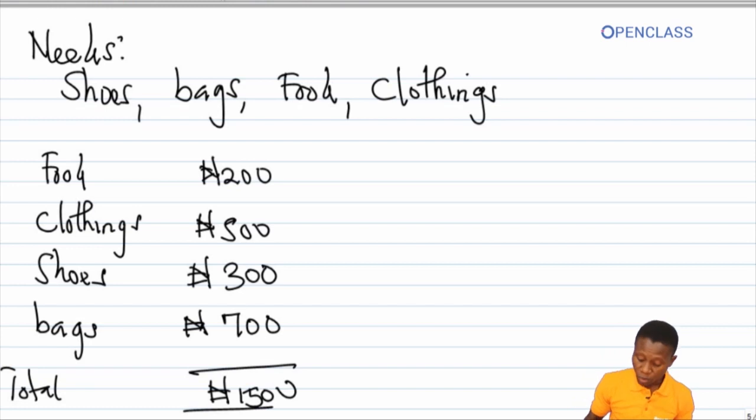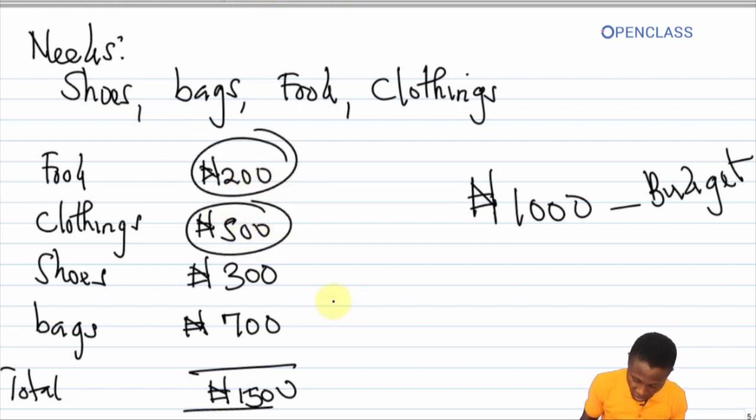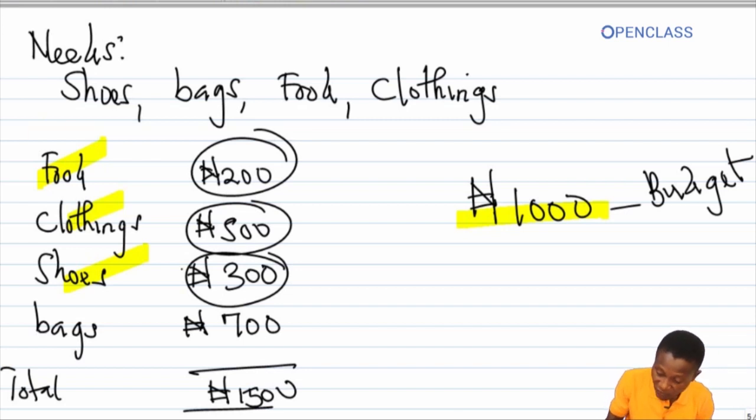If as a student I only have a budget of 1,000 naira, all I need to do is I'll be able to get food, clothing, and shoes. So my 1,000 naira budget only enables me to satisfy the need of food, clothing, and shoe. This example is called a scale of preference.